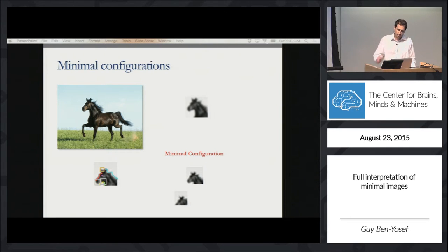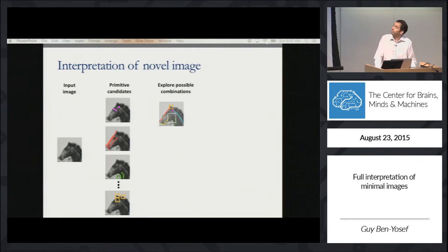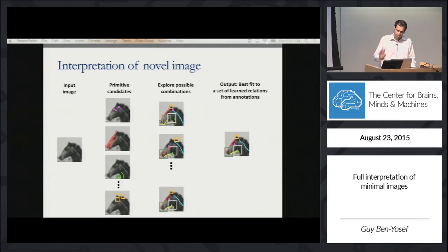We represent these components as points, contours, and regions. We annotate these components for several examples of the same minimal image, and we use these annotations for learning. When trying to interpret a new image, our scheme searches for combinations of points, contours, and regions, and finally selects the combination that is most compatible with a set of learned relations from annotations.